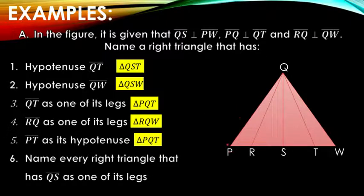Line PT as its hypotenuse. Where is line PT? Here is line PT. That's the hypotenuse, the longest leg. Could it be triangle PQT? Yes, correct. Triangle PQT.